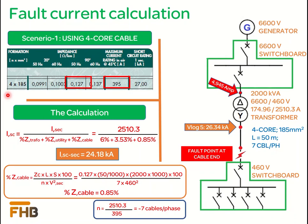Here is the first scenario where we have selected the 4-core 185 mm² cable for our calculation. To calculate the short circuit current, first we need to calculate the total short circuit impedance of the circuit during a short circuit condition.